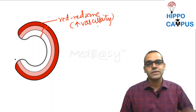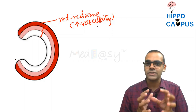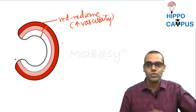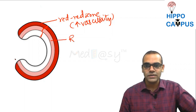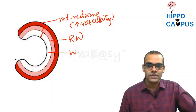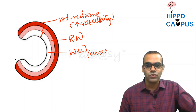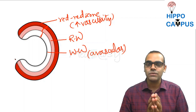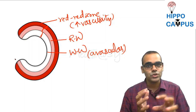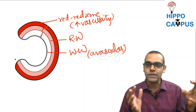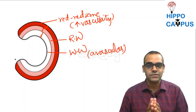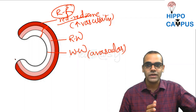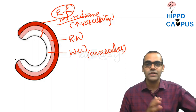The zones of the meniscus are divided based on blood supply. The periphery (outer one-third) has maximum blood supply — the red-red zone. The middle one-third is the red-white zone. The inner one-third is the white-white zone, which is avascular. Maximum potential for repair is in the red-red zone because adequate blood supply is needed for successful healing.